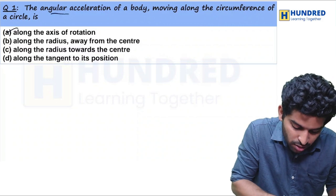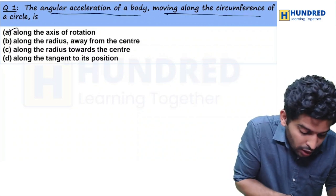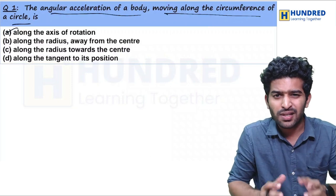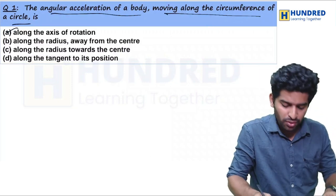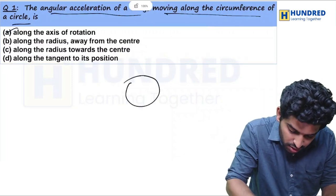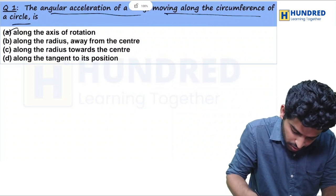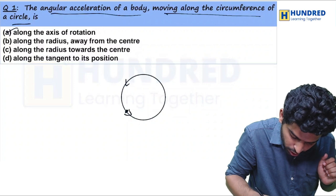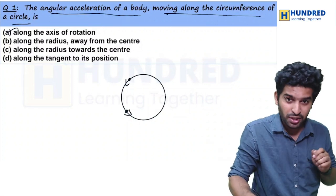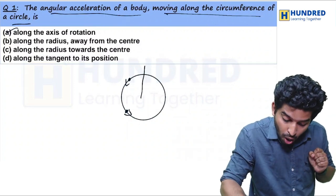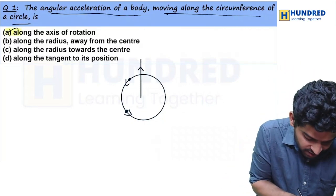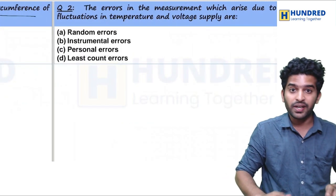The very first question, the angular acceleration of a body moving along the circumference of the circle will have an angular acceleration in what direction? It will be along the axis of rotation. Direct, straightforward question.